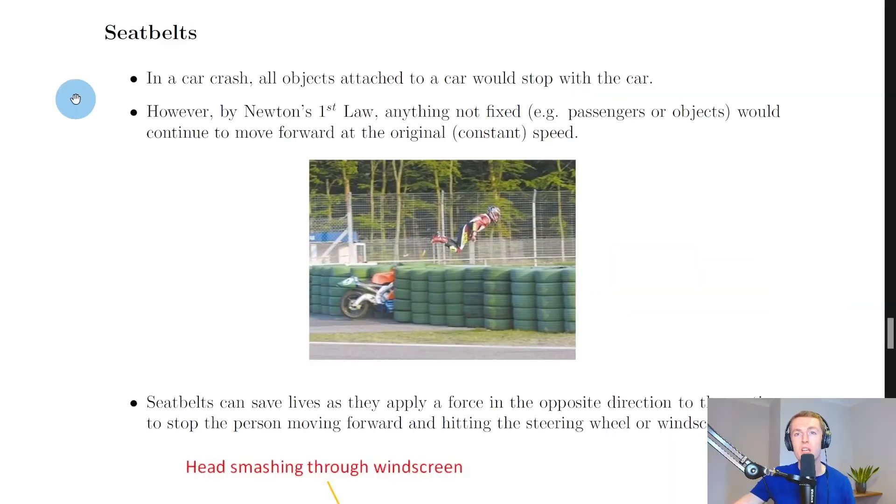Going back to the notes now, we're going to look at an application of Newton's First Law in vehicle safety. So we have seatbelts here. It says in a car crash, all objects attached to a car would stop with the car. However, by Newton's First Law, anything not fixed, for example passengers or objects, would continue to move forward at their original or constant speed.